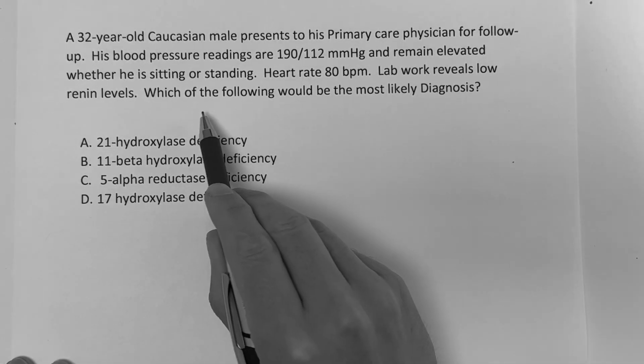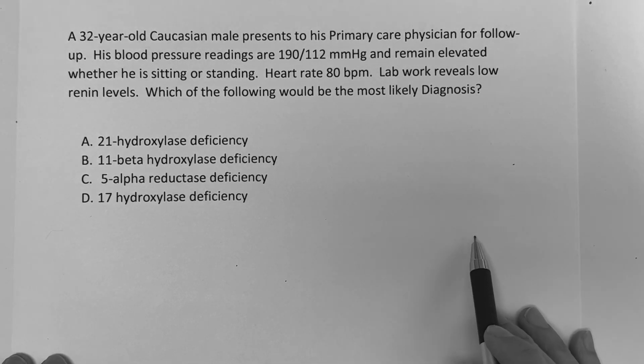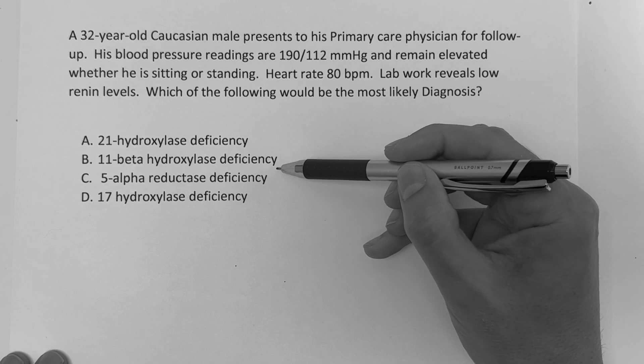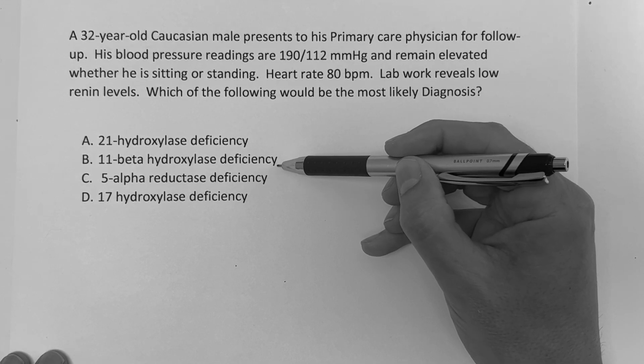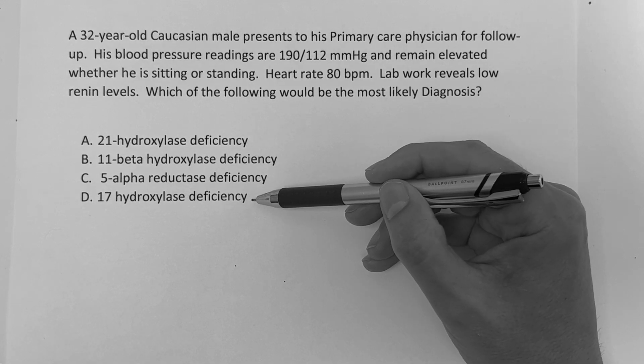All right guys, so the question reads, which of the following would be the most likely diagnosis? And your answer choices are A, 21-hydroxylase deficiency, B, 11-beta-hydroxylase deficiency, C, 5-alpha-reductase deficiency, or D, 17-hydroxylase deficiency.